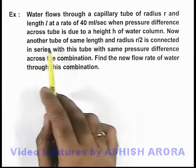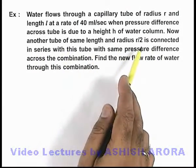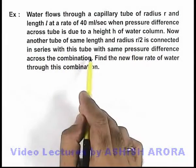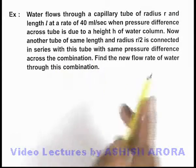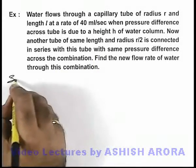Now another tube of same length and radius r/2 is connected in series with this tube. With the same pressure difference across the combination, we are required to find the new flow rate.